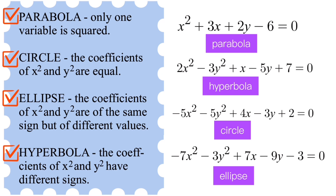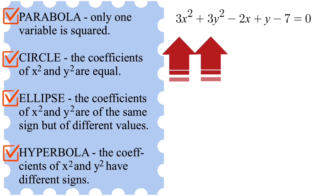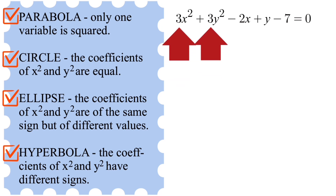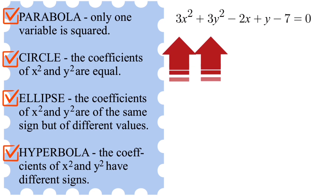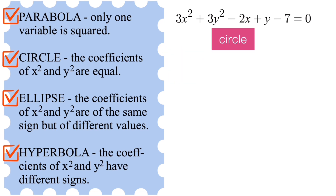Now let's go over some more examples. In this example the coefficient of both squared variables is the same or equal, which is 3 and 3. This tells us that this is an example of a circle.